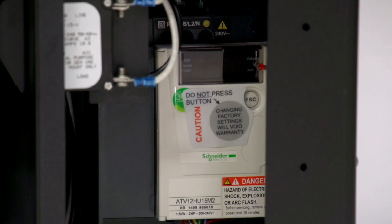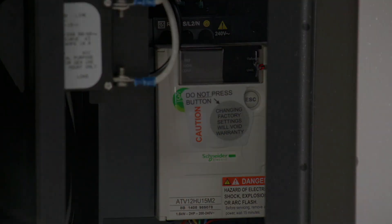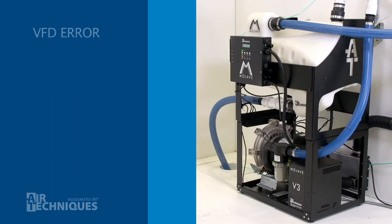Reset the VFD by shutting off the main circuit breaker and waiting three minutes until the VFD completely resets, then turn the breaker back on. Always wait the full three minutes for the VFD to reset. There are capacitors that keep it powered even after the power is off.